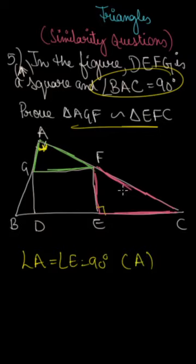Okay, now I have to tell you that GF is parallel to BC. It is a square, so the sides of the square are parallel. Therefore, GF is parallel to BC.